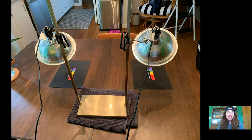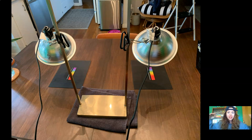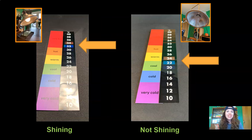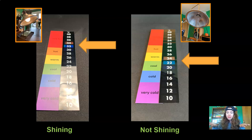In the last lesson, I set up this investigation in my kitchen. I used two lamps, and I set them up at the exact same height. Underneath, I put pieces of black rubber, and I put a thermometer on each piece. Then I turned on one of the lamps, and I left the other lamp off. We investigated the difference in temperature between the thermometer under the lamp that was on and the thermometer under the lamp that was off.